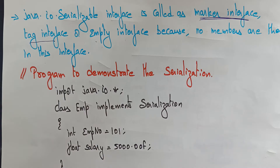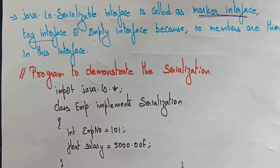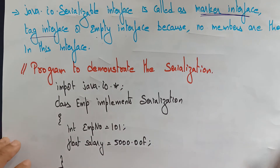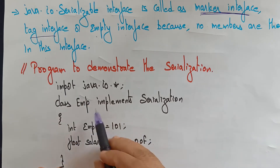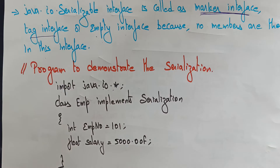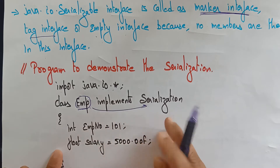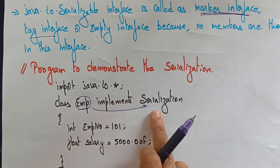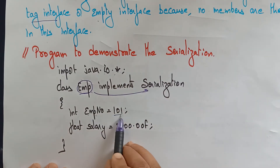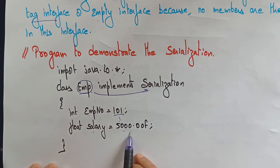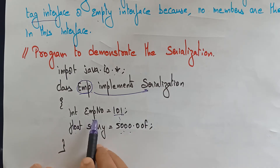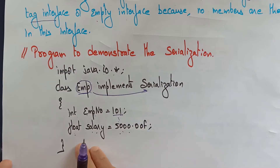Now let's understand the program for serialization — how we are reading and writing an object to and from a file, and to and from a network. To demonstrate serialization, first import the package java.io.*. So when I import the star, all the packages related to this program are imported. Then class Employee — that is my class name — implements the Serializable interface, which is present in java.io.*. I am taking employee number 101 and the salary of that employee as 5000. So I declare these variables: int employeeNumber and float salary in the class Employee.